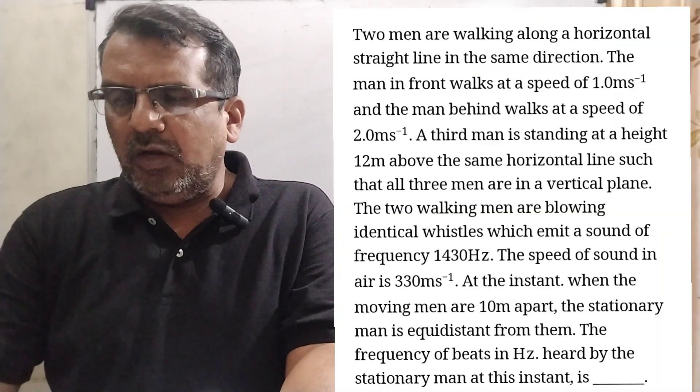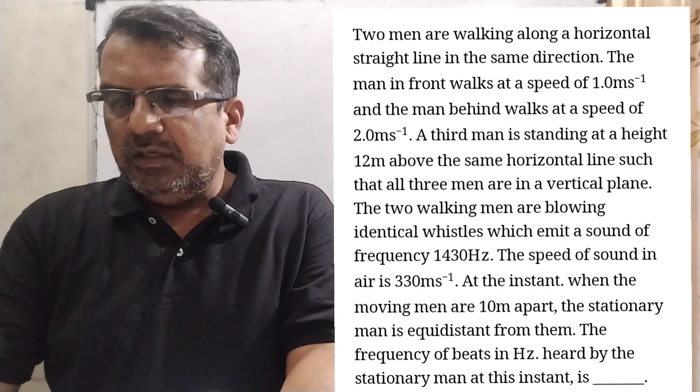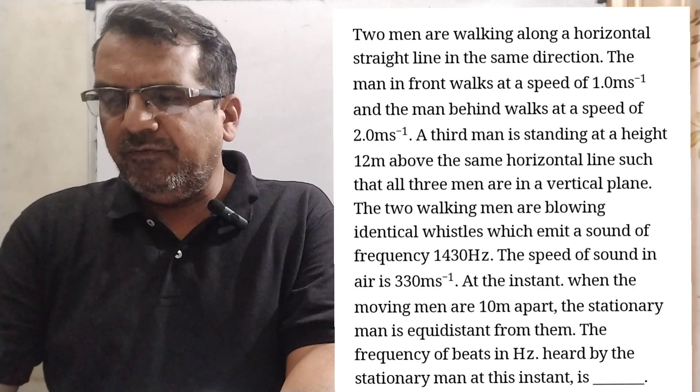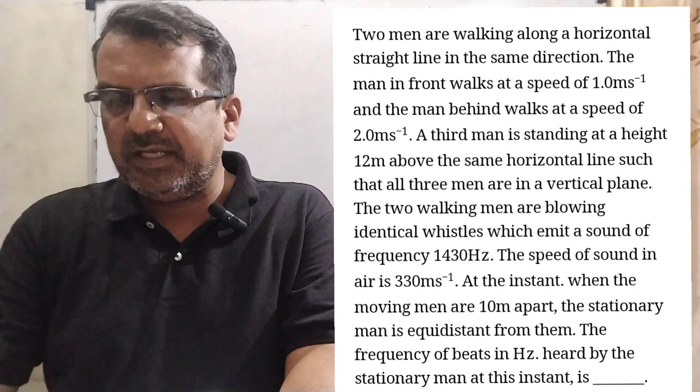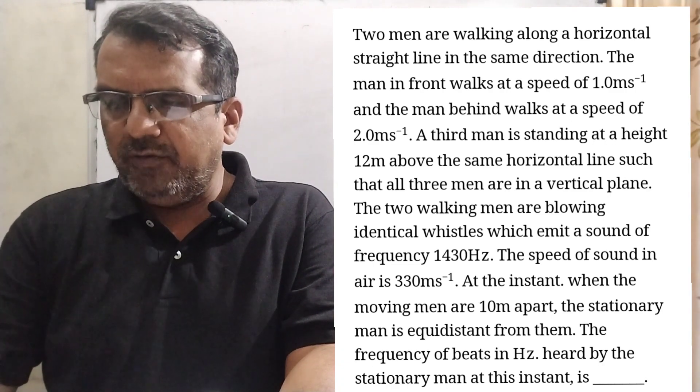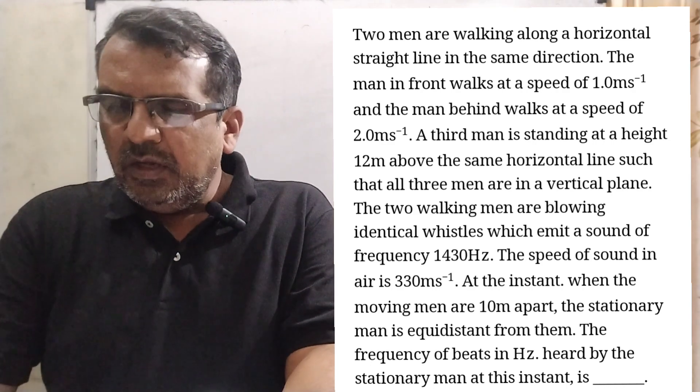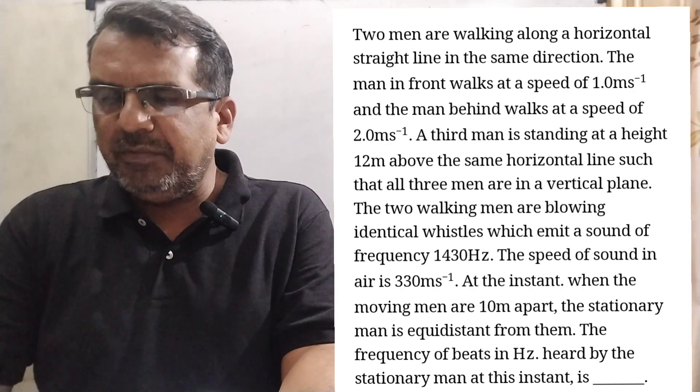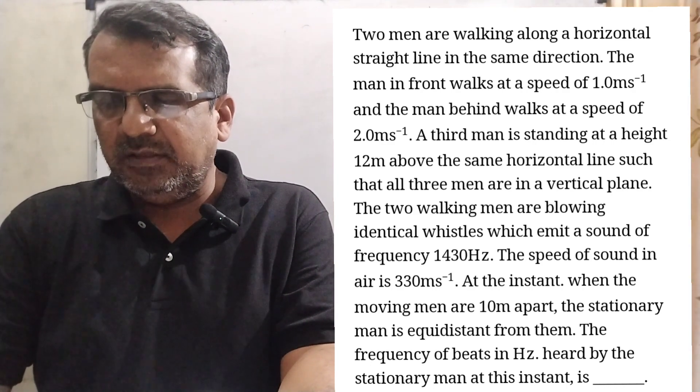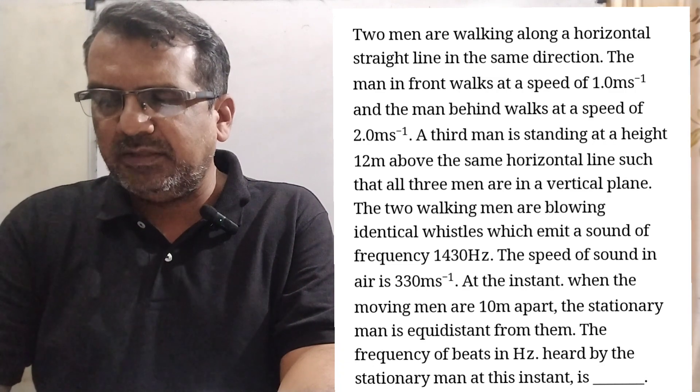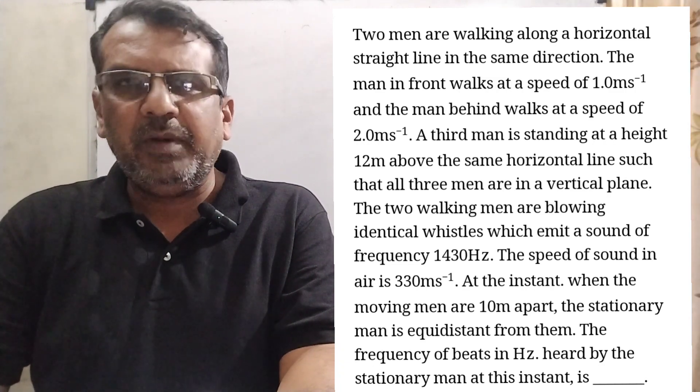Two men are walking along a horizontal straight line in the same direction. The man in front walks at a speed 1 meter per second and the man behind walks at a speed 2 meter per second. A third man is standing at a height 12 meter above the same horizontal line, such that all three men are in a vertical plane.